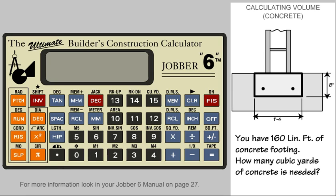Calculating volume for concrete: we have concrete footings for a building that total 160 lineal feet. The size footing used is 16 inches wide and 8 inches deep. We need to find how many cubic yards of concrete is required for the pour.